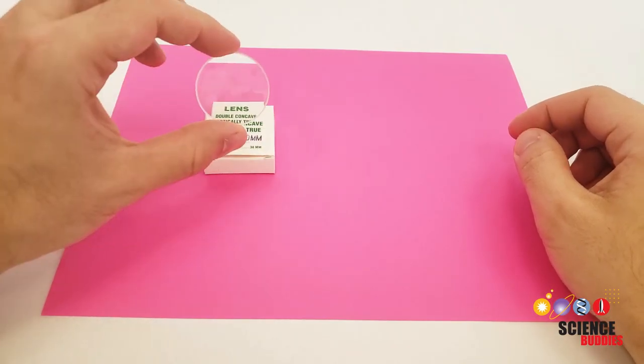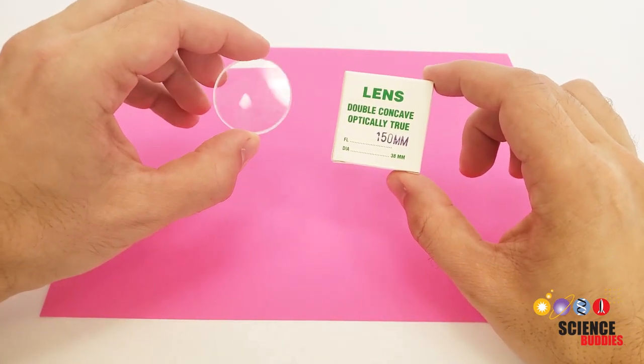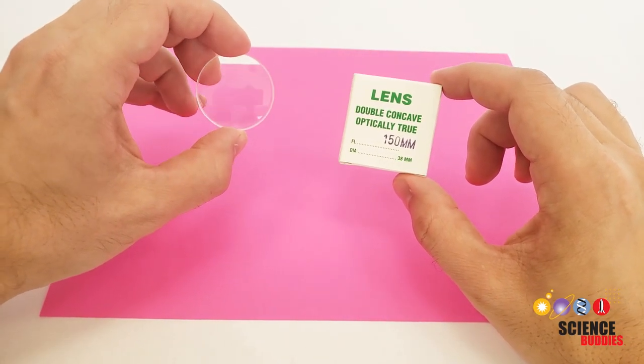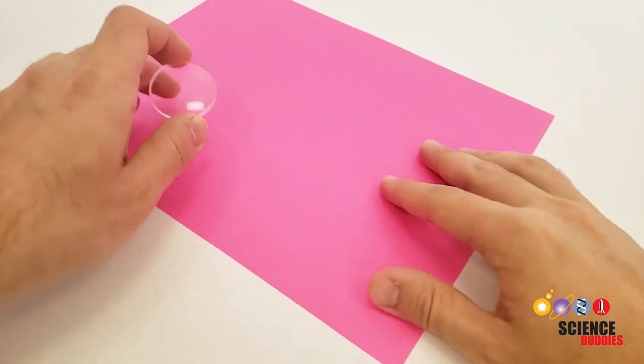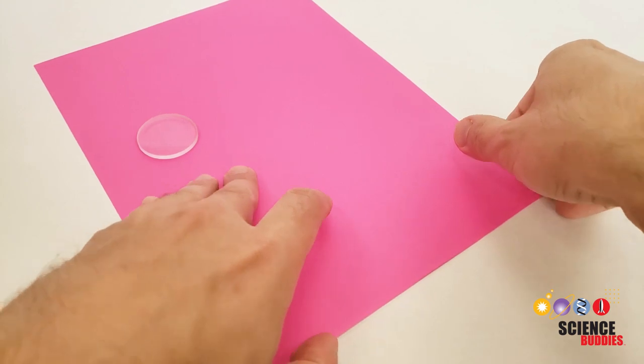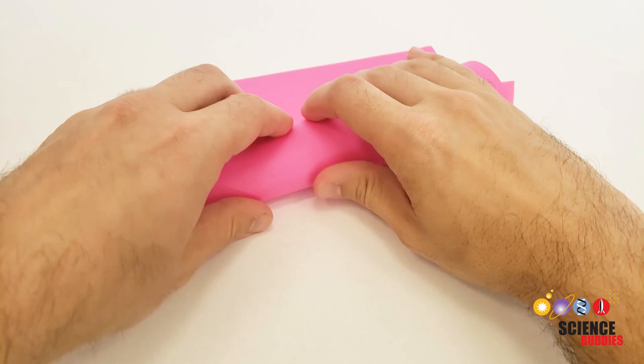To make your telescope take one of the lenses and one of the pieces of cardstock. I'm going to start with the concave lens which will be the eyepiece or the lens that you look into. Take the piece of cardstock along one of these short edges and you're going to roll it up so the tube is the same diameter as the lens.